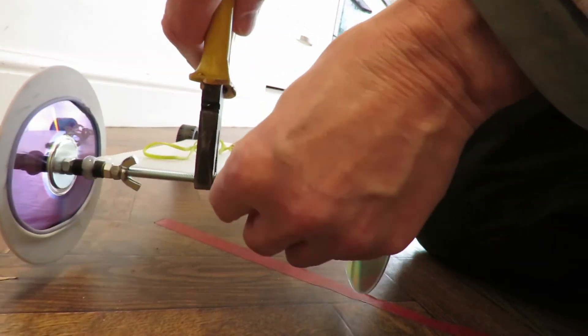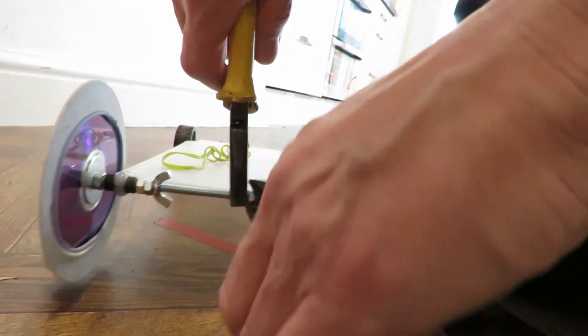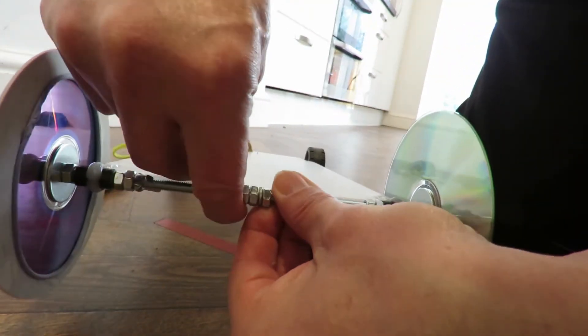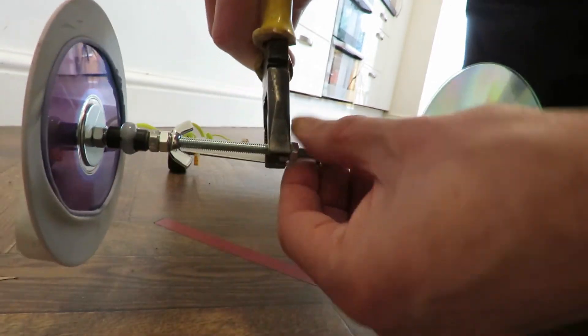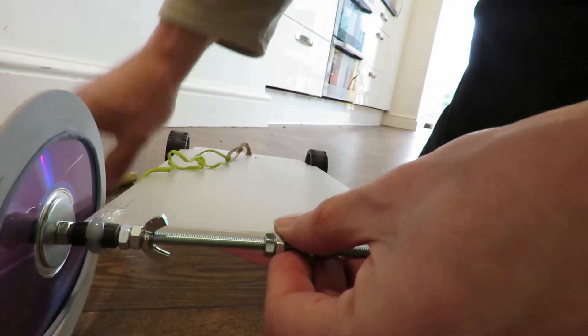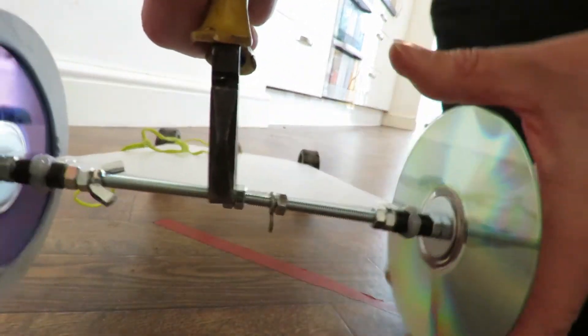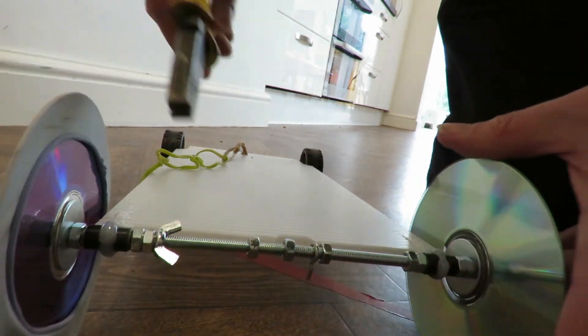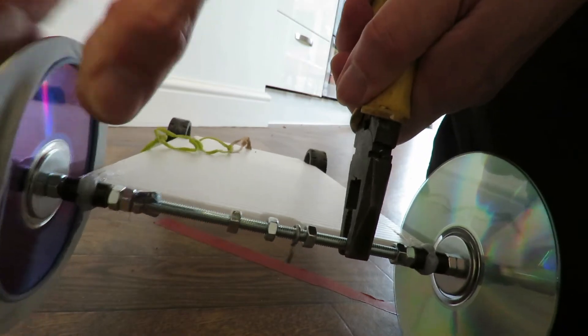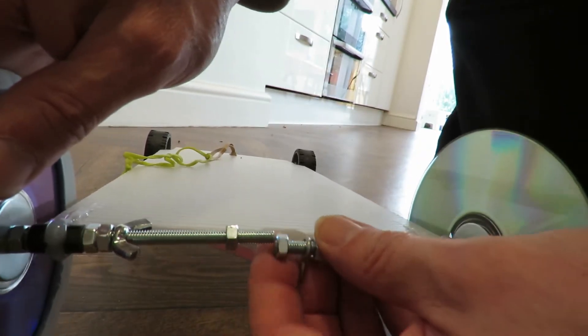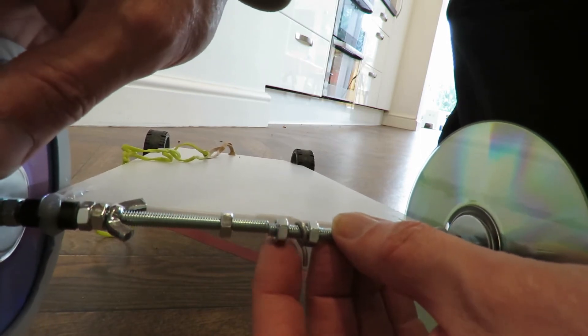If you had a continuous bar you wouldn't need to bolt it together in the middle like this. I've done that up really tight. Right. There we go. So yeah that's all I did. I've just had two bolts held together with a nut in the middle.